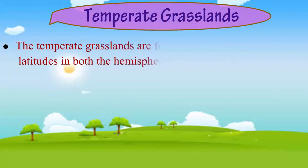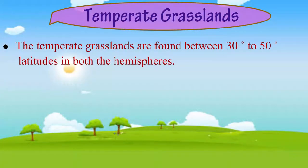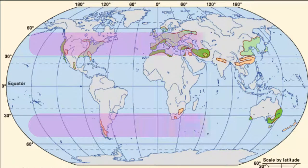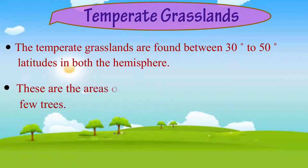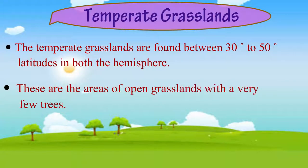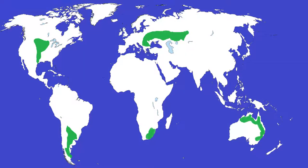The temperate grasslands are found between 30 degrees to 50 degrees latitudes in both the hemispheres. These are the areas of open grasslands with very few trees. Let us look at the map to know the different names of temperate grasslands in different parts of the world.